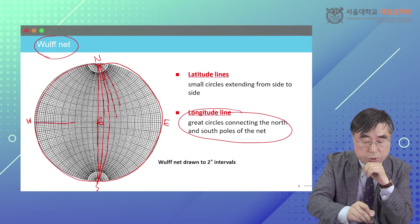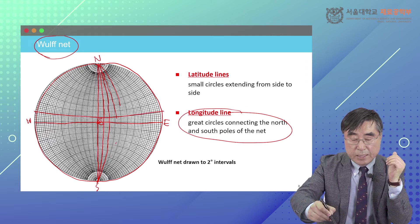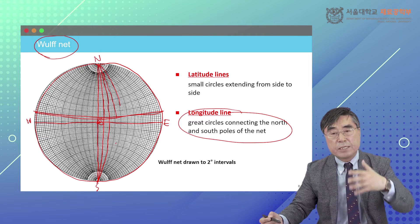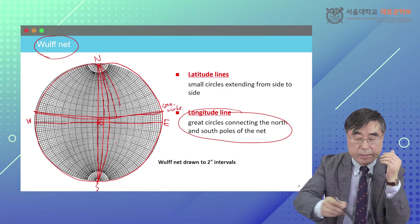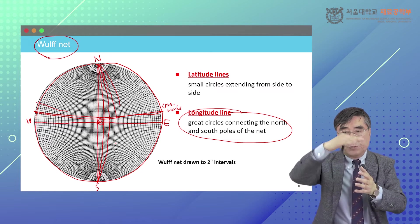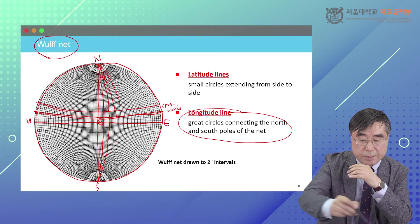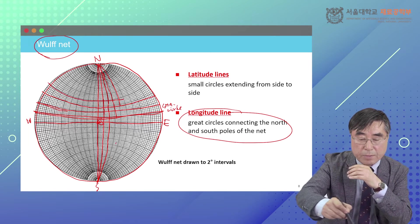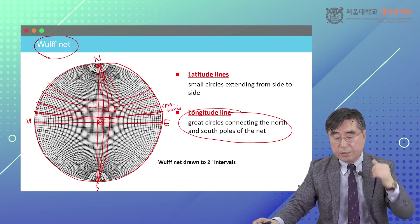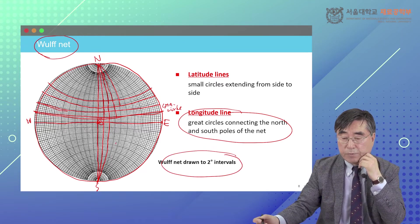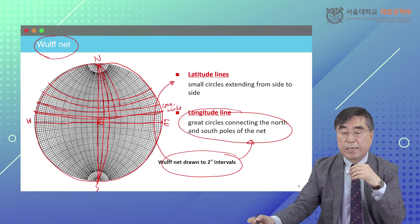There is also information about the small circles. From east and west, the lines that do not pass through the center of the sphere are part of the small circle. This small circle moves 10 degrees, 20 degrees from the center of the sphere, and there is a series of small circles represented in this Wulff net at two-degree intervals. So the Wulff net is drawn to two-degree intervals as a set of longitudinal great circles and a set of small circles as latitude lines.